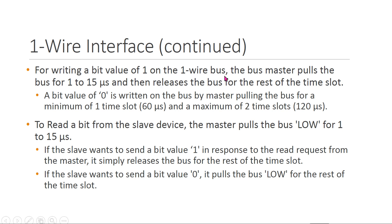The slave pulls the bus low for a minimum of one time slot, that is 60 microseconds. For writing a bit value of 1 on the One-Wire bus, the bus master pulls the bus low for 1 to 15 microseconds and then releases the bus for the rest of the time slot. A bit value of 0 is written by the master pulling the bus low for a minimum of one time slot and a maximum of two time slots, that is 120 microseconds.